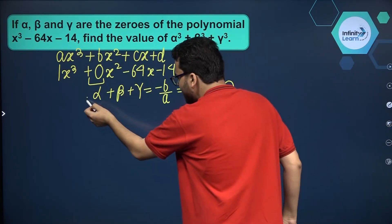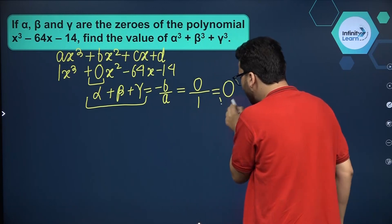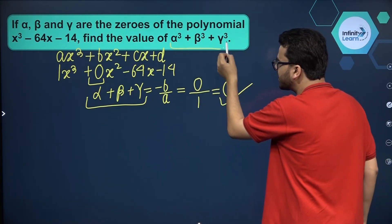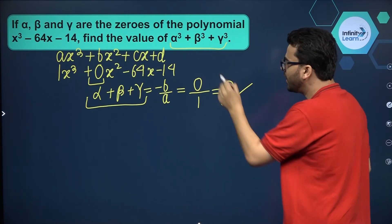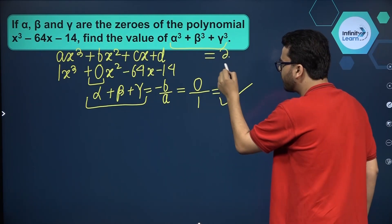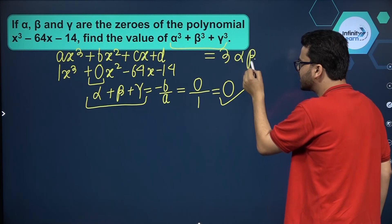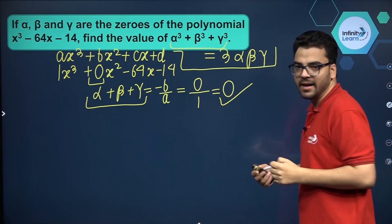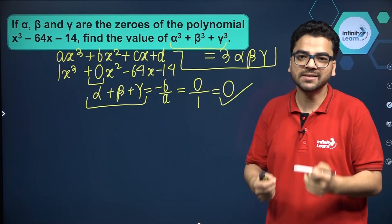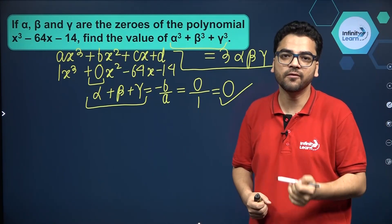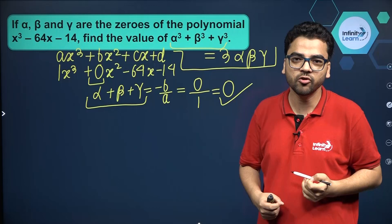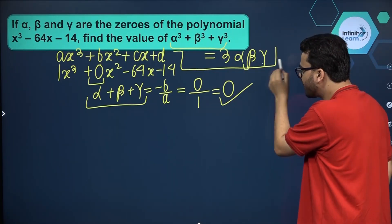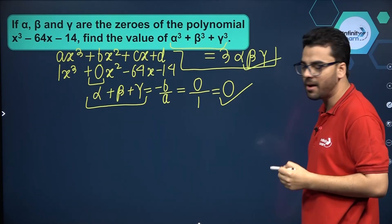If alpha plus beta plus gamma is equal to 0, what will be the value of alpha cubed plus beta cubed plus gamma cubed? It will be equal to 3·alpha·beta·gamma. This is an identity — if alpha plus beta plus gamma equals 0, then alpha cubed plus beta cubed plus gamma cubed equals 3·alpha·beta·gamma. So basically we have to find the value of 3·alpha·beta·gamma.